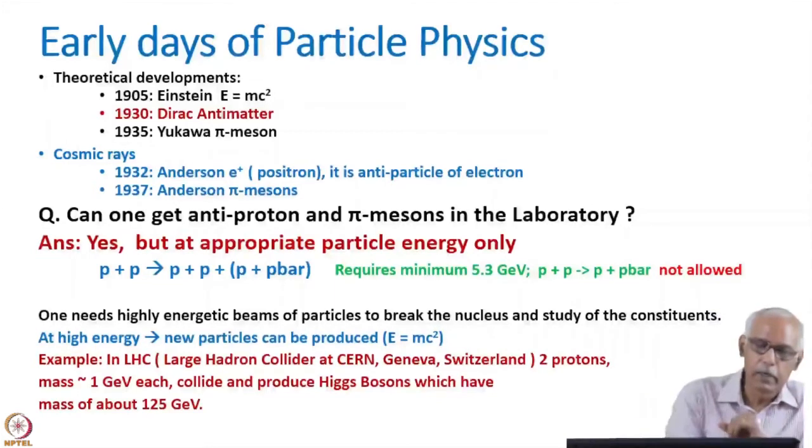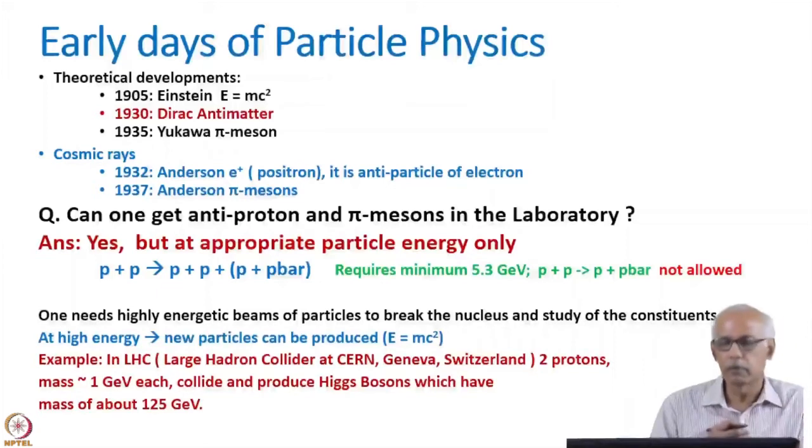There are all available particles and there are different kinds of particles. For example, in 1932 itself, the positron, which is an anti-particle of electron, was discovered. And later on, pions were discovered in 1937. So people were able to get all these information using the cosmic rays. In cosmic rays, the particles of all energies are available.